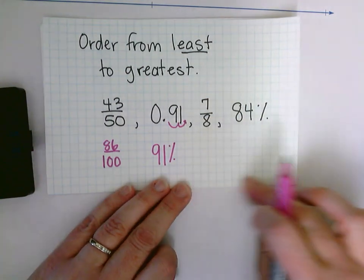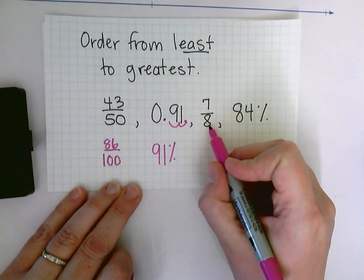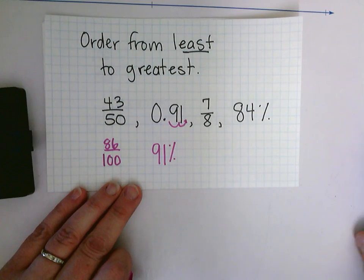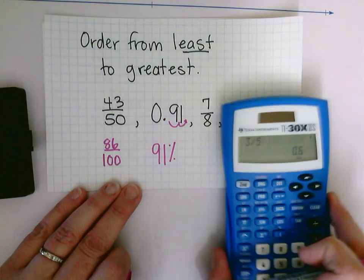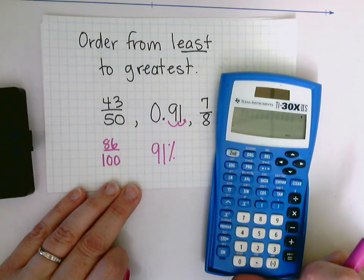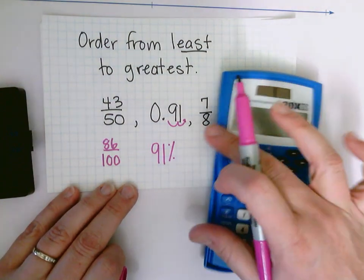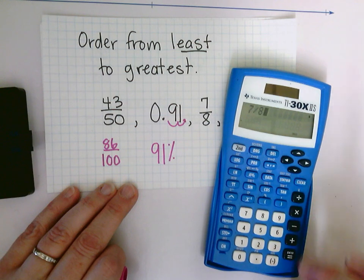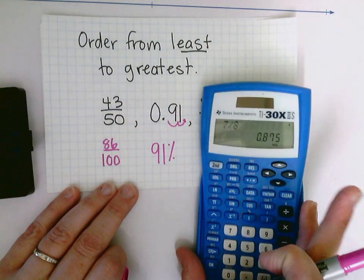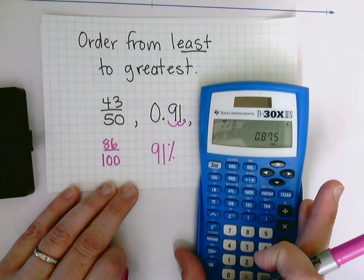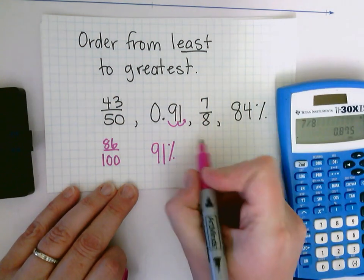For 7/8, well, that's harder to get. I don't know anything times 8 that makes 100. So you know what I'm going to do? I'm going to use my calculator. And I'm going to use my division to help me with 7/8. So I'm going to put 7 divided by 8 in my calculator. And you see, I get 875/1000.